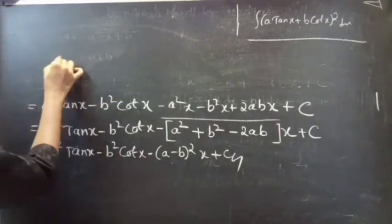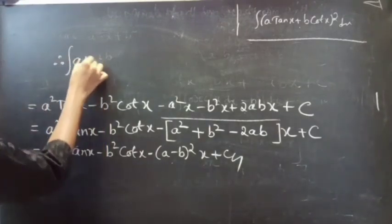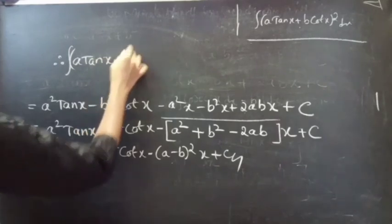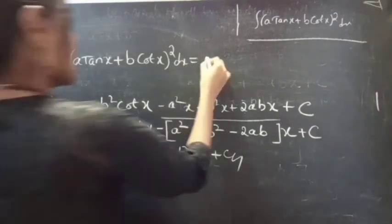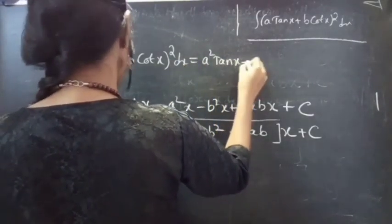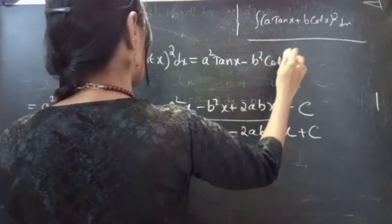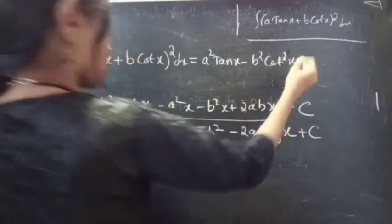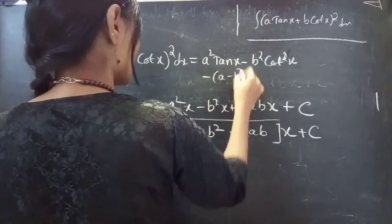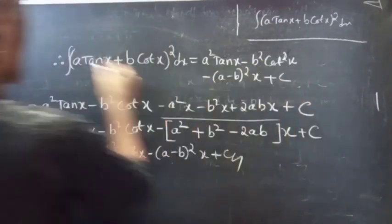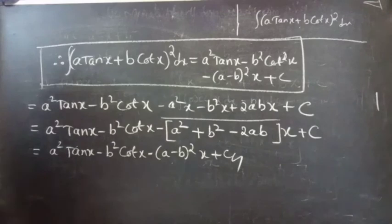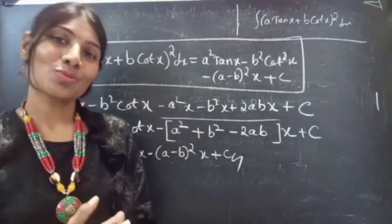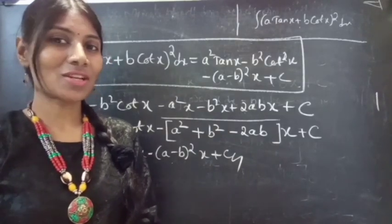Therefore, the integral of (a·tan x + b·cot x)² dx equals a²tan x − b²cot x − (a − b)²·x + C. This completes the second problem. We have seen two problems in this video. Hope you understand. See you in the next video. Bye-bye.